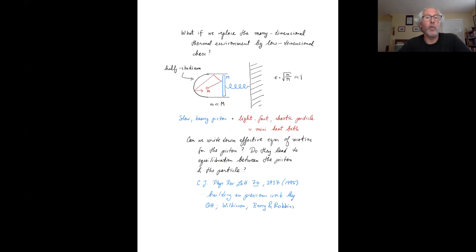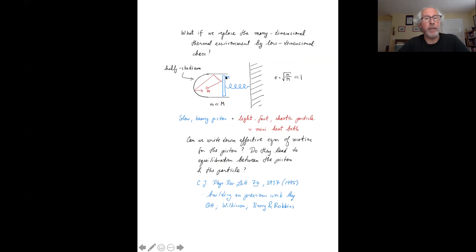What I'd like to do now is look at the question: what if we replace this many-particle thermal environment by a low-dimensional chaos? For a specific model, although the analysis I'm going to present is more general, suppose I take one of these stadium billiards and chop it in half. I close off one end by a massive piston M — this piston is the analog of the Brownian particle. Inside this half stadium, I have a single light particle bouncing around off the walls and off the piston. I also have a spring attaching this piston to a fixed wall, though this is mostly irrelevant. I assume the mass of the fluid particle is much, much less than the mass of the piston, and I introduce a smallness parameter epsilon, which is the square root of the ratio of the masses.